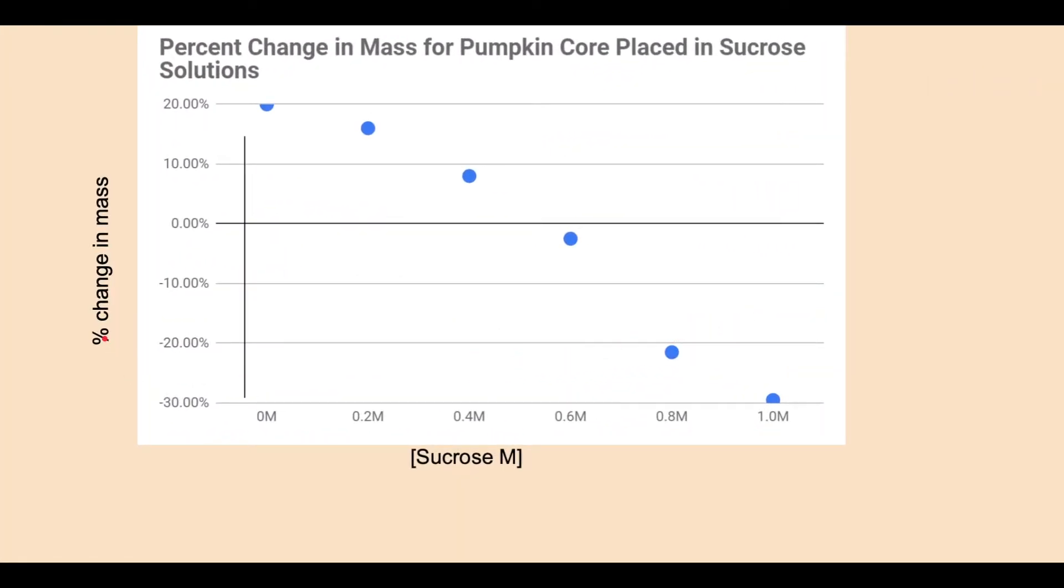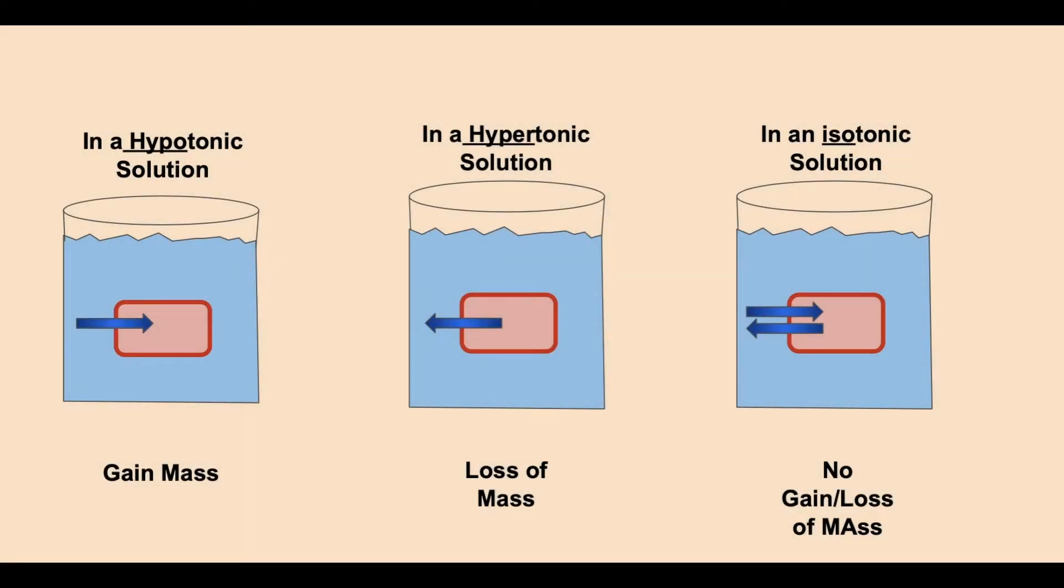When you set up your graph, you're going to want percent change in mass on the y-axis. You're going to put the sucrose concentration on the x-axis. You're going to have 0 percent change right in the middle because there's both positive and negative. Now, when we do a trend, there's always a little bit of error. You may even have a data point that's way off as an outlier. That's perfectly fine, because what you're going to do is use a computer program to estimate this, or if you're doing this on paper, you can get a straight edge ruler and just estimate the best fit line.